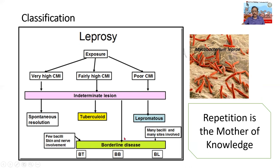Whenever there is a spectrum midway, it is called borderline. Borderline itself, if more towards tuberculoid, is called borderline tuberculoid; if more towards lepromatous, it is borderline lepromatous; and if right in the middle, we call it borderline borderline. There will be fewer bacilli in tuberculoid - skin and nerve can be involved - whereas there will be many bacilli in lepromatous leprosy, giving a poorer prognosis. Repetition is the mother of knowledge - please do remember this classification.